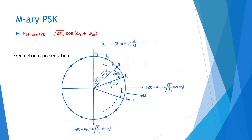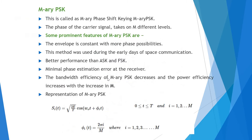There are orthogonal signals used for the signal space representation of a QPSK signal. The distance of each M-Array PSK waveform from the origin is √Es = √(Ps·Ts). The phase of the carrier signal takes on M different levels. Some features of M-Array PSK are: the envelope is constant with more phase possibilities; this method was used during early days of space communication; it has better performance than ASK and FSK; minimum phase estimation error at the receiver; the bandwidth efficiency decreases and power efficiency increases with increasing M.